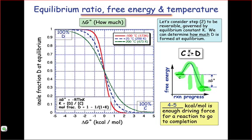What you're seeing here in the graph at left is the proportion of D in the reaction mixture as a function of the energy difference between the reactants and products, also known as delta G0 or delta G naught.